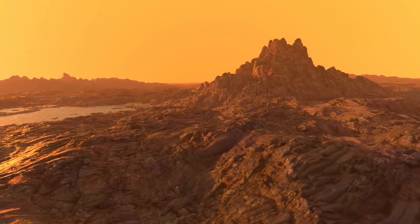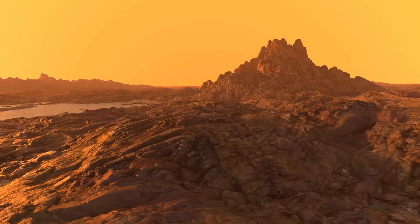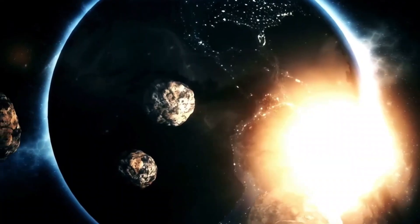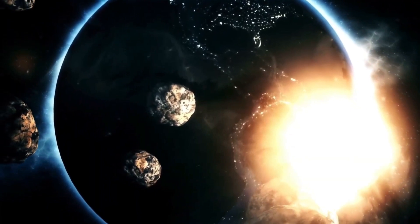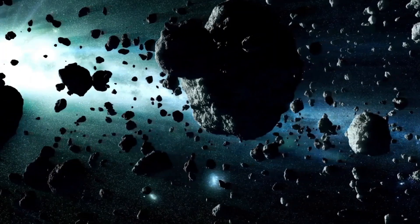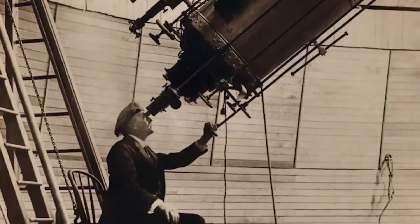Proxima Centauri b has long been a focal point for scientists searching for habitable exoplanets due to its proximity and Earth-like characteristics. Located within the habitable zone of its parent star, Proxima Centauri, it possesses conditions that could potentially support life. The discovery of bright lights on its surface adds a new dimension to our understanding of this distant world.